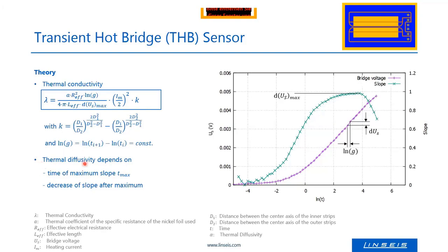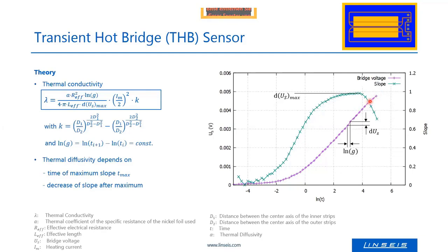We can also calculate the thermal diffusivity. This diffusivity is calculated at the end of the measurement when the first derivative of the bridge voltage curve reaches its maximum — the inflection point. After the maximum, the first derivative decreases, indicating a transition toward a steady state. From this transition time, the thermal diffusivity can be calculated.